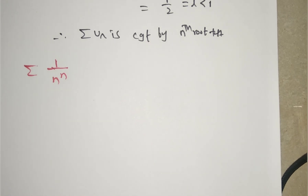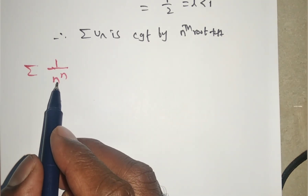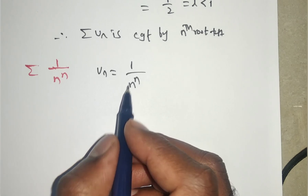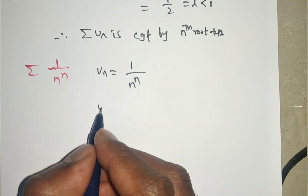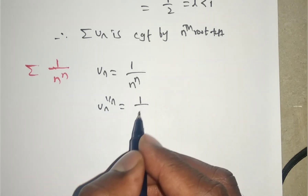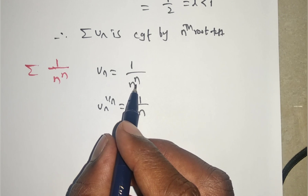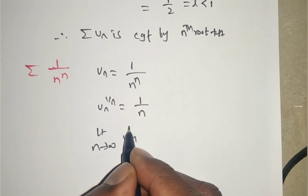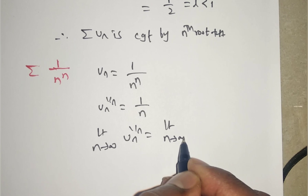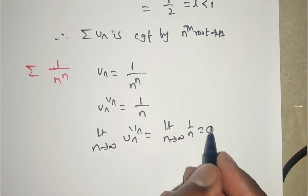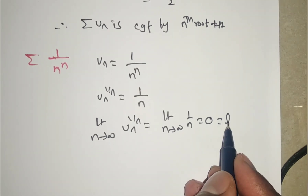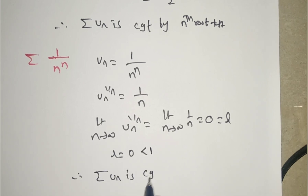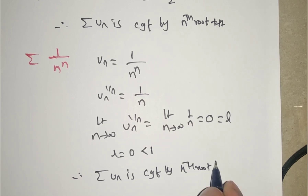Test the convergence of Σ1/nⁿ. Here uₙ = 1/nⁿ, where the denominator has power n. Applying the nth root: uₙ^(1/n) = 1/n. Taking the limit as n→∞: limit of 1/n = 0 as n→∞. So l = 0, which is less than 1. Therefore Σuₙ is convergent by the nth root test.